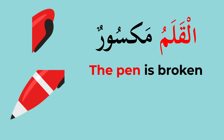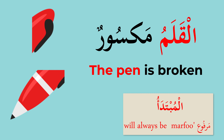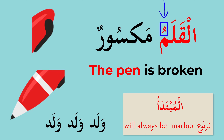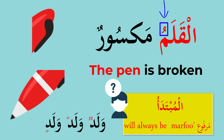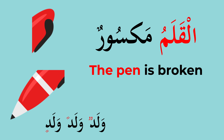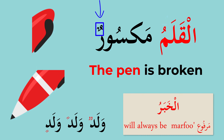Rule number two: the Mubtada will always be marfoo. What does marfoo mean? It will end with a dhamma. Now we are getting to what we were trying to say from the beginning — a noun can be marfoo, mansoob, or majroor. We want to know why they are marfoo, mansoob, or majroor. If it is a Mubtada, it will always be marfoo. And if it is the Khabar, it will also always be marfoo, even if there are no vowel signs.